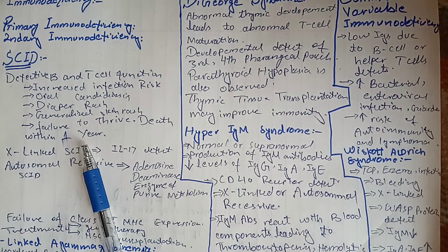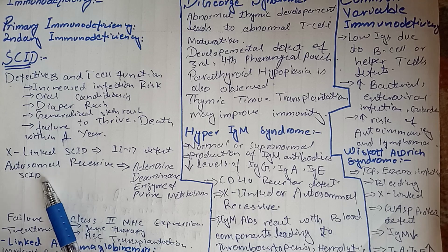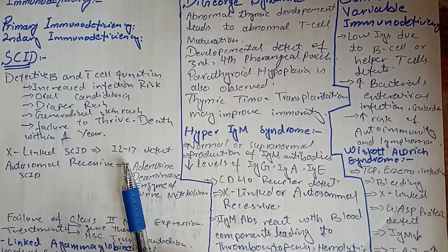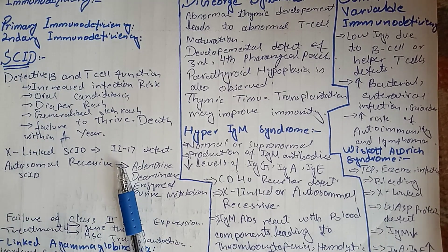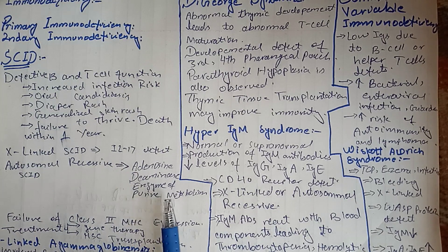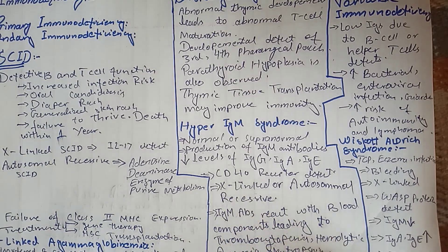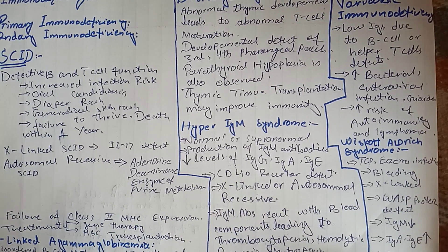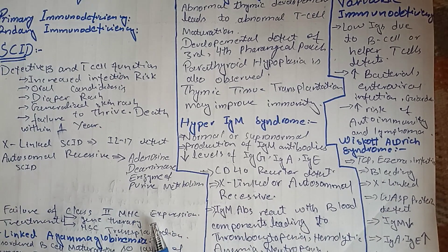SCID can be X-linked or autosomal recessive. In the X-linked case, there is a defect in the interleukin-2 receptor gamma chain, compromising maturation of B and T lymphocytes. In autosomal recessive cases, adenosine deaminase enzyme is defective — involved in purine metabolism — causing toxic metabolites to accumulate, which are toxic to B and T lymphocytes.